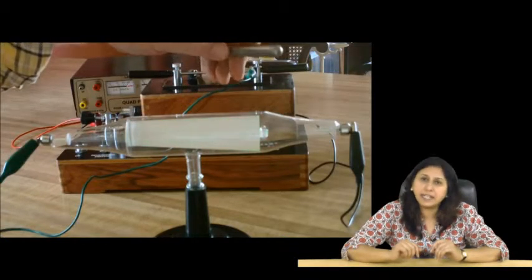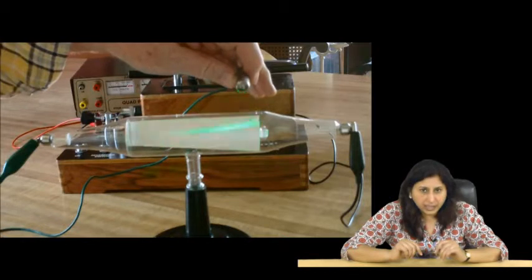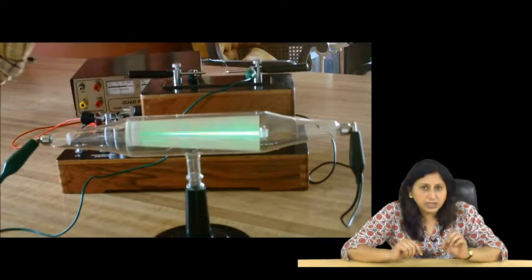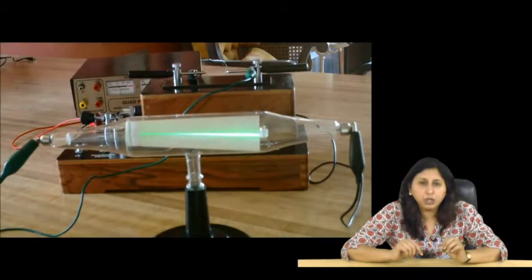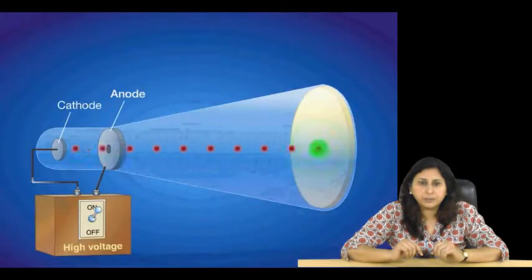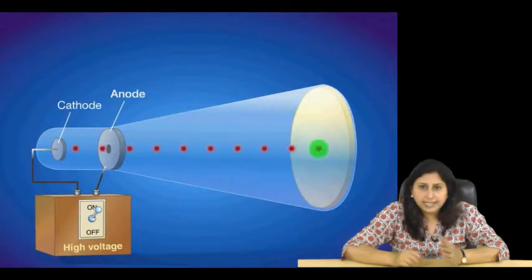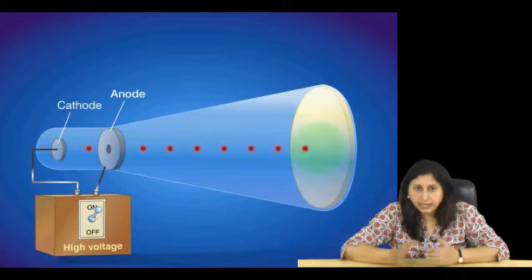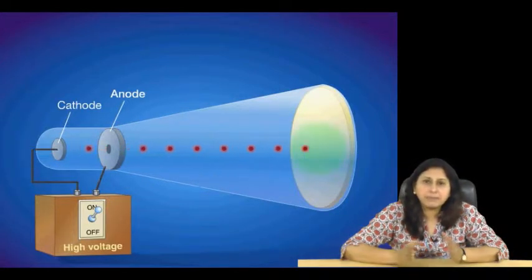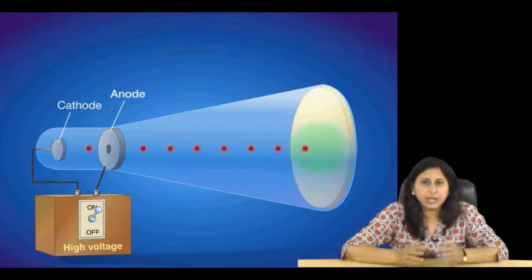In 1897, J.J. Thomson, an English physicist, determined the charge to mass ratio of the electron. He adjusted the electric field so that the electrostatic deflection, theta e, was the same as the magnetic deflection, theta b.